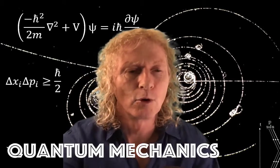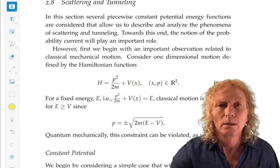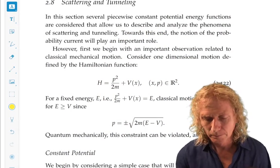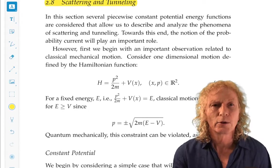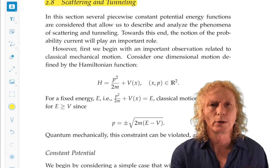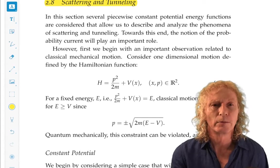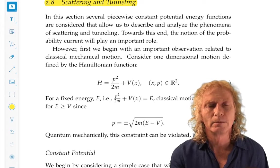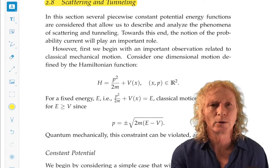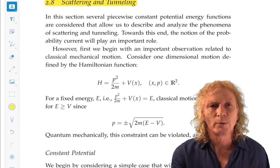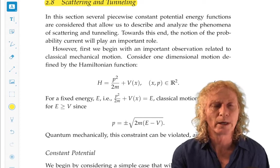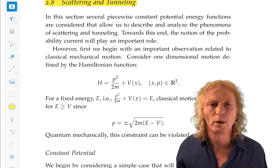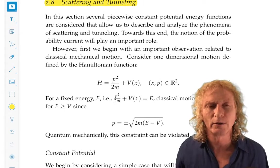Before we get into that in detail, first of all, what does it mean? We're going to be concerned with the motion of a quantum particle on the real line, from minus infinity to plus infinity, and during the course of its motion, it's going to encounter an obstacle. This obstacle is going to be modeled by a change of potential energy. It could be many obstacles, but we're just going to consider the particular case of one obstacle.